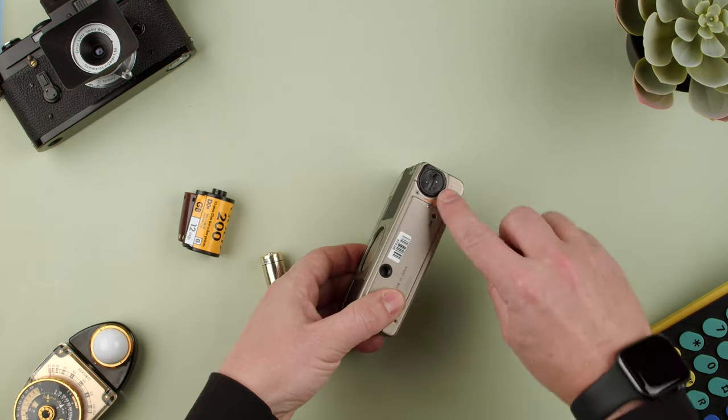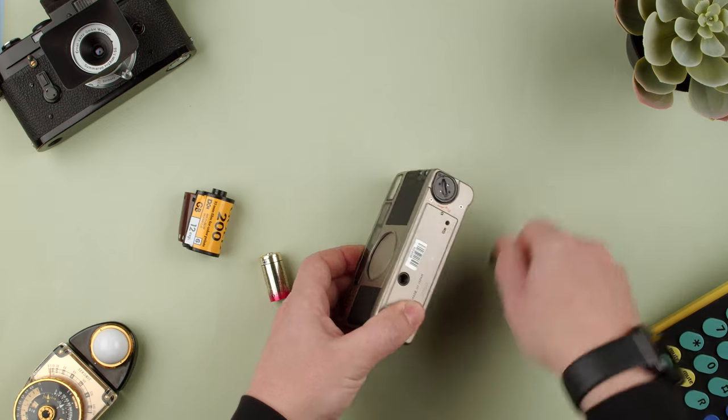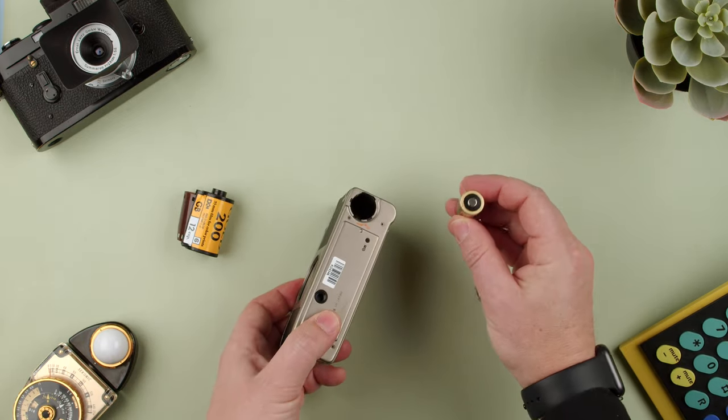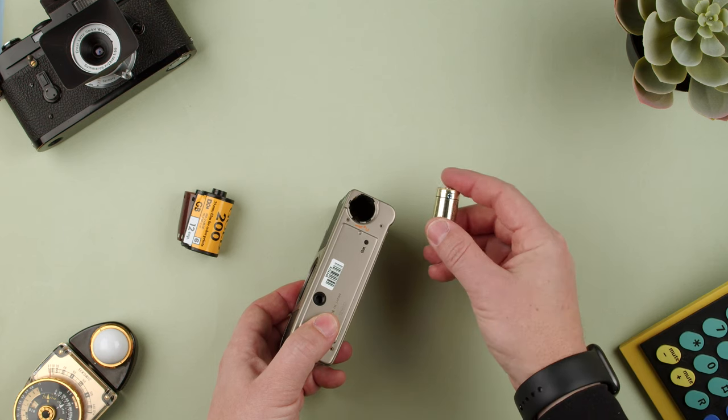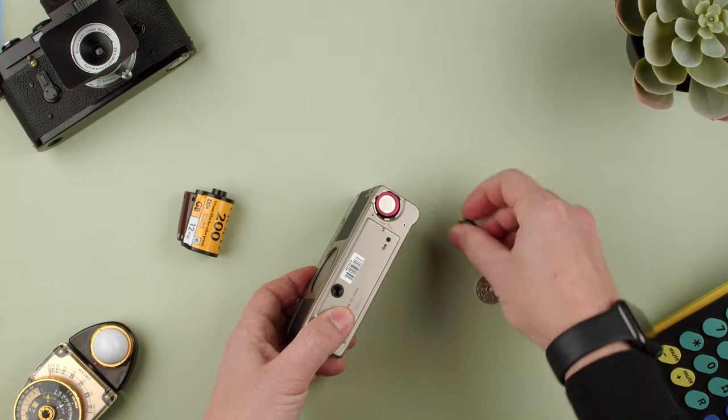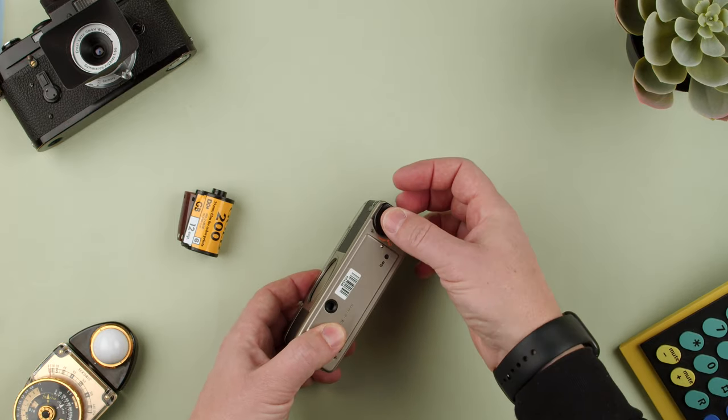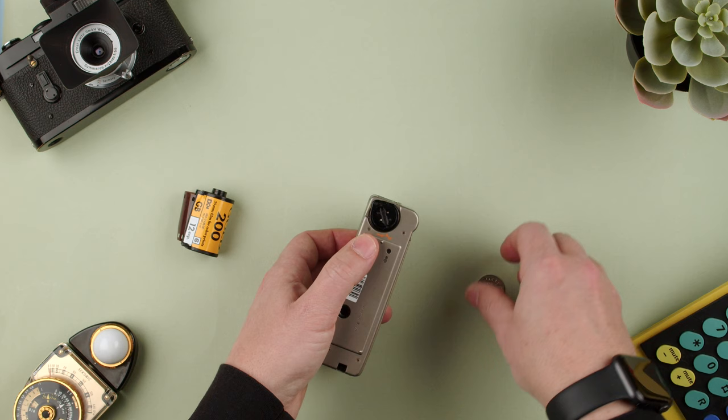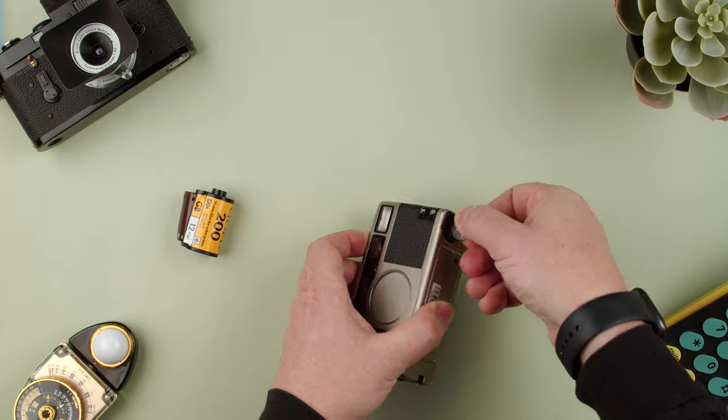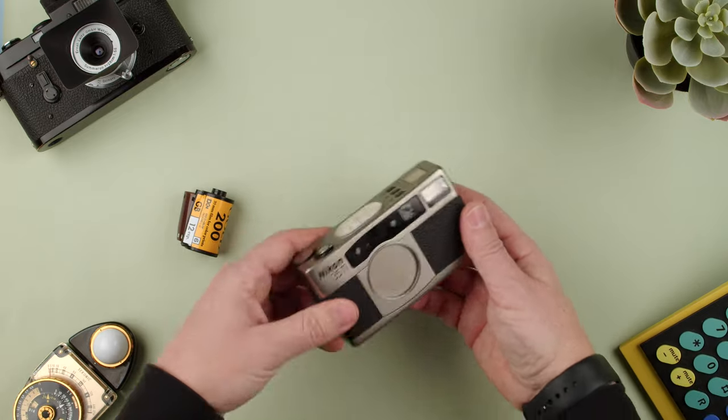We go to the bottom and open it with a coin. The positive side, the one with the protruding thing, goes downward. We put the battery in, turn it around, put the coin in the slot, and lock it. Now you can see it's there.